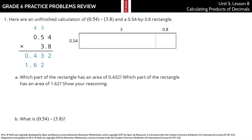Here is an unfinished calculation of 54 hundredths times 3 and 8 tenths, and a 54 hundredths by 3 and 8 tenths rectangle. Which part of the rectangle has an area of 432 thousandths? Which part has an area of 1 and 62 hundredths? Well, the smaller part is the smaller number — 432 thousandths — and the bigger part is 1 and 62 hundredths.